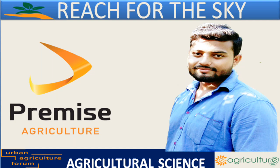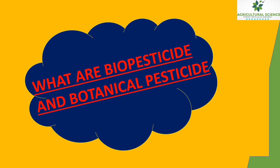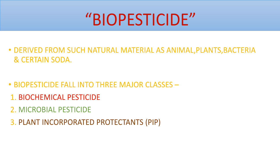Welcome to the channel Agricultural Sciences. Today we'll discuss biopesticides and botanical pesticides in detail. Biopesticides are derived from natural materials such as animals, plants, bacteria, and certain other sources. They are classified into three major classes: biochemical pesticides, microbial pesticides, and PIPs — plant incorporated protectants, which involve genetic modification in the plant.